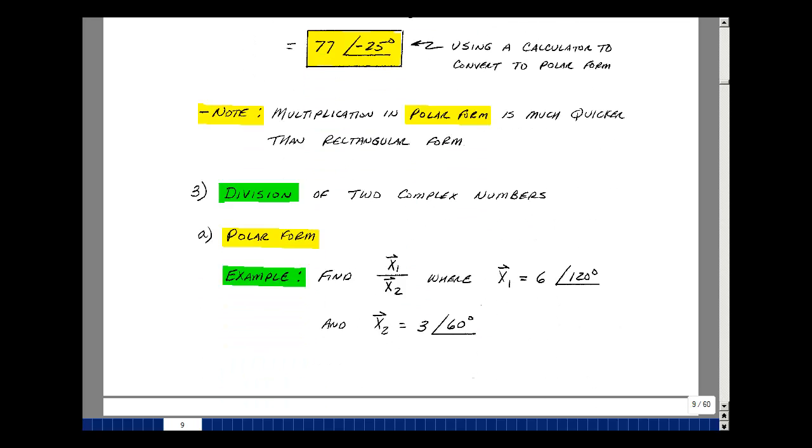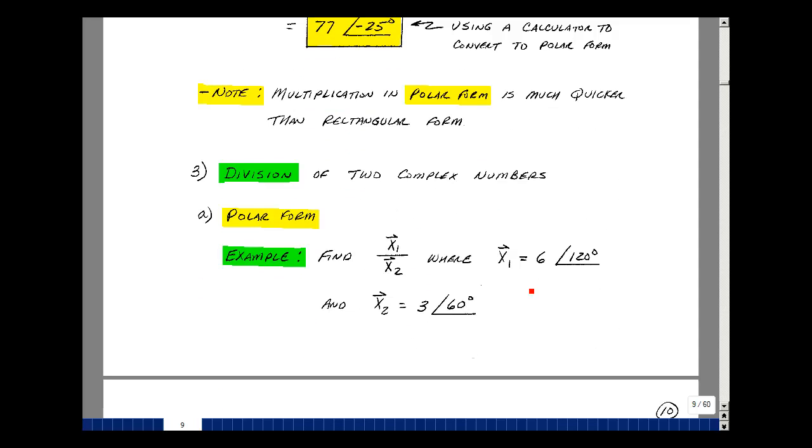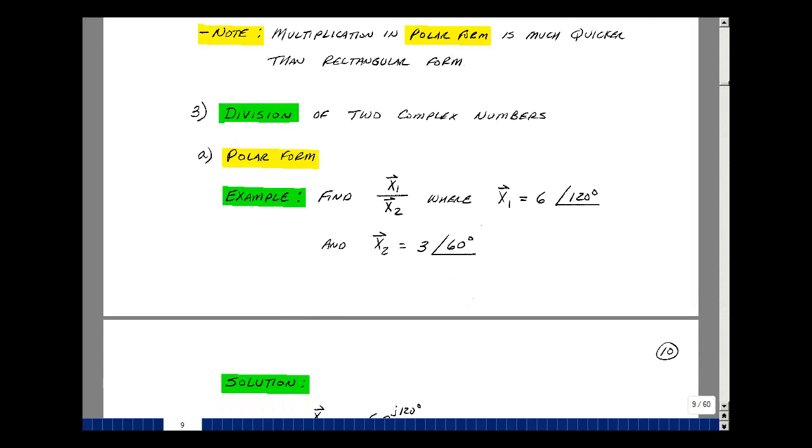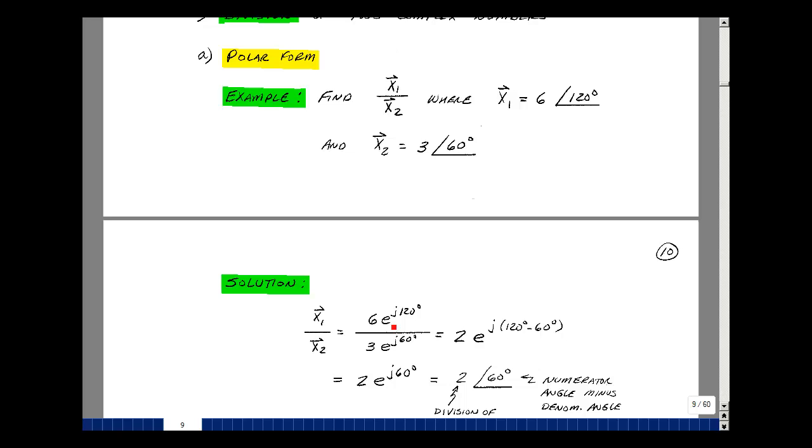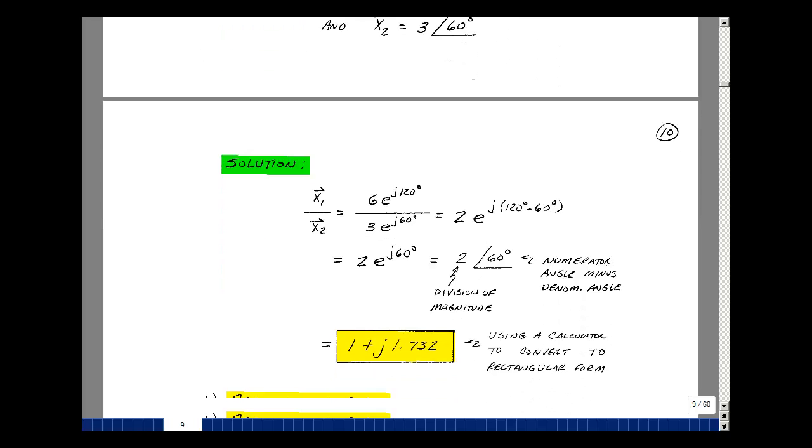Let's do a division of two complex numbers. Suppose that I had X1, which is 6 at angle 120, and X2, which is 3 at angle 60. And I take the ratio of those two. Remember that 6 at angle 120 is a shorthand notation for 6 times e to the J120. And I have 3 times e to the J60. So then the ratio of these two is going to be 2 for the magnitude. And then for the exponents here, I'll take the J120 and subtract the J60. The difference of those two would be 60 degrees. So my resultant then is 2 at angle 60. So I just divide the magnitudes and I just subtract the angles.